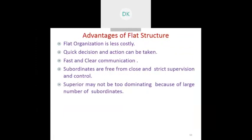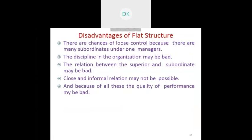The advantages of low span of control or tall structure include close supervisory control, more authority structure, accountability to higher authority, and enhanced top-level regulation over the organization. The demerits include lower employee motivation, slower decision-making, communication barriers between upper and lower management, and fewer benefits and rewards given in the tall organization.